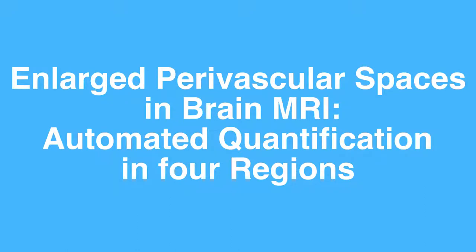Enlarged Perivascular Spaces, PVS, are structural brain changes visible in MRI, are common in aging, and are considered a reflection of cerebral small-vessel disease.